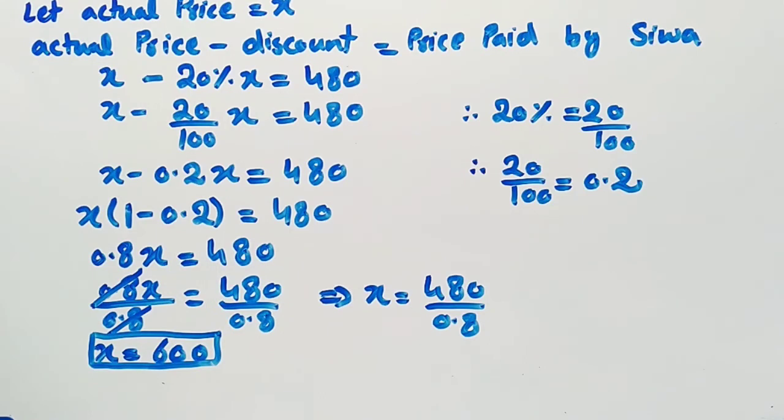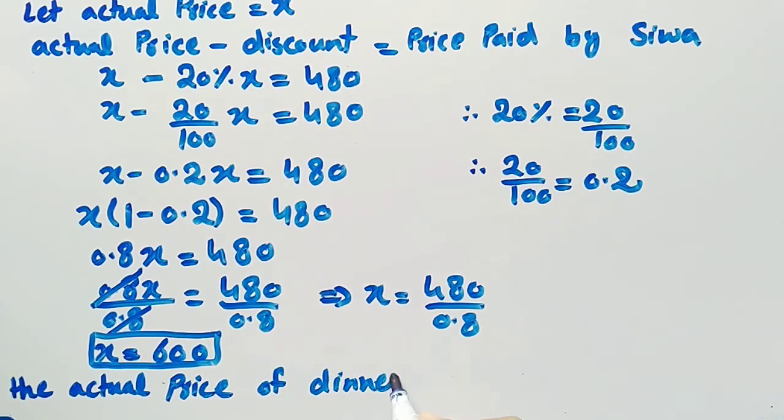Since we have found the value of X, it means that the actual price of the dinner set is 600 rupees.